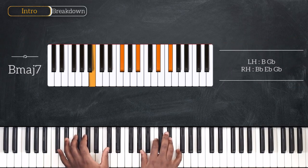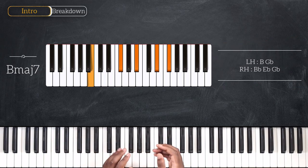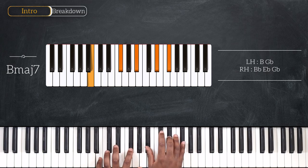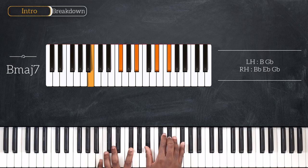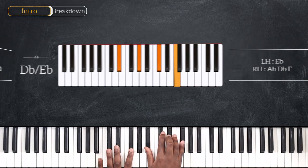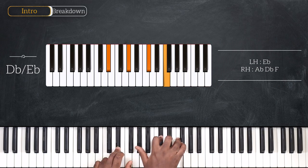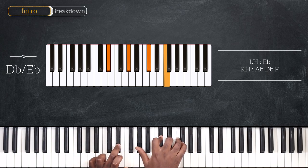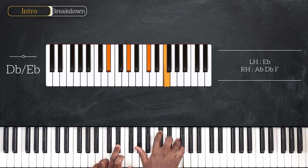Then we're playing off-key with this B major 7 chord — that's B and Gb on the left, and right hand I'm playing Bb, Eb and Gb. And I'm going to finish with Db over Eb: that's Eb on my left, playing Ab, Db and F on the right hand.